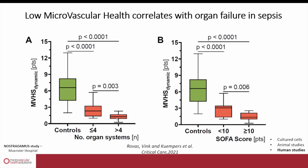These are data from a recent publication on sepsis patients. In sepsis patients with a damaged microvascular system, the greater the level of glycocalyx damage and microvascular damage, the more it correlates with more and more organs failing in those individual patients.